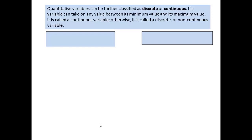Quantitative variables can be further classified as discrete or continuous. If a variable can take on any value between its minimum and maximum value, it's called a continuous variable. Otherwise, it's called a discrete or non-continuous variable.